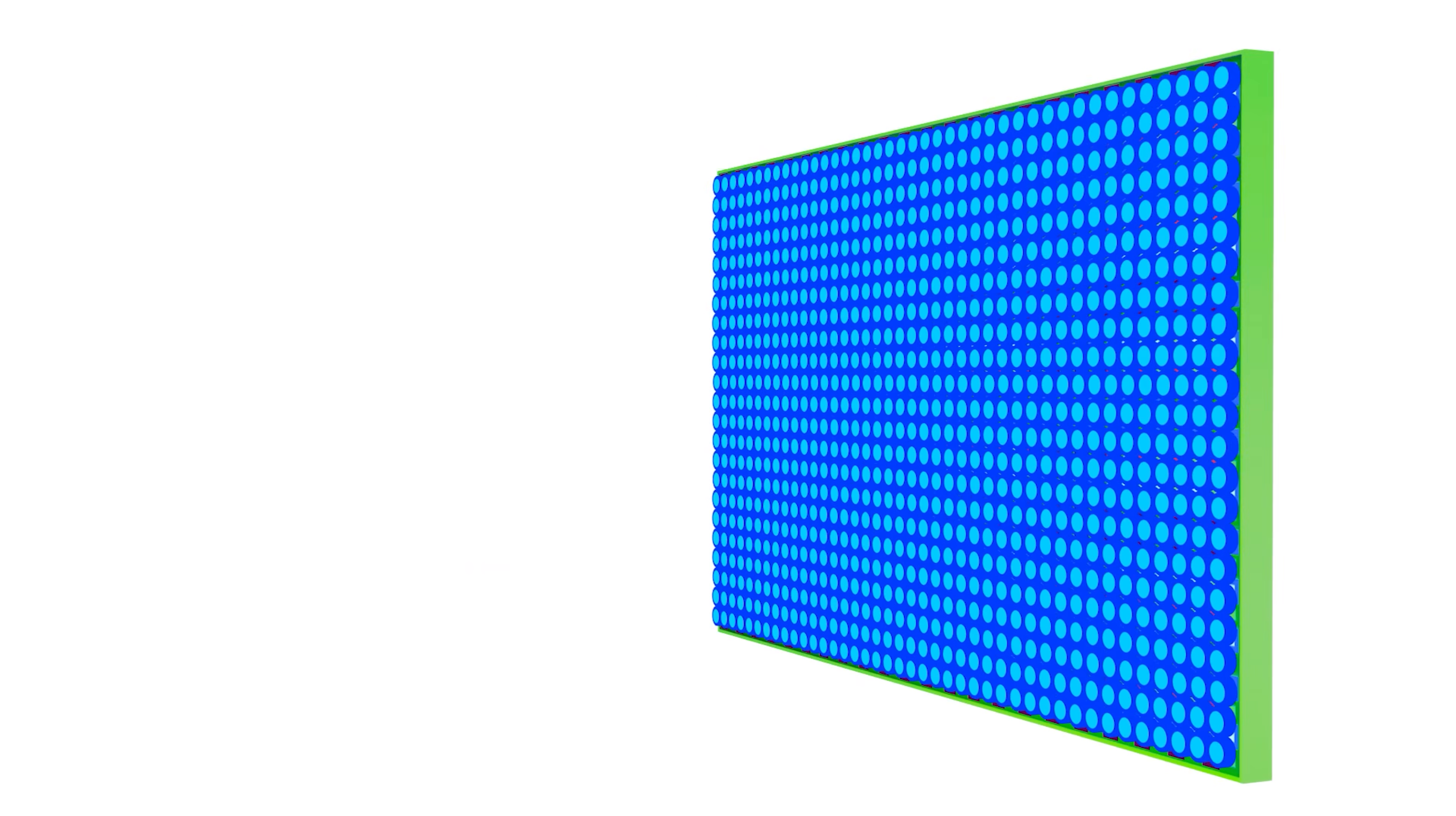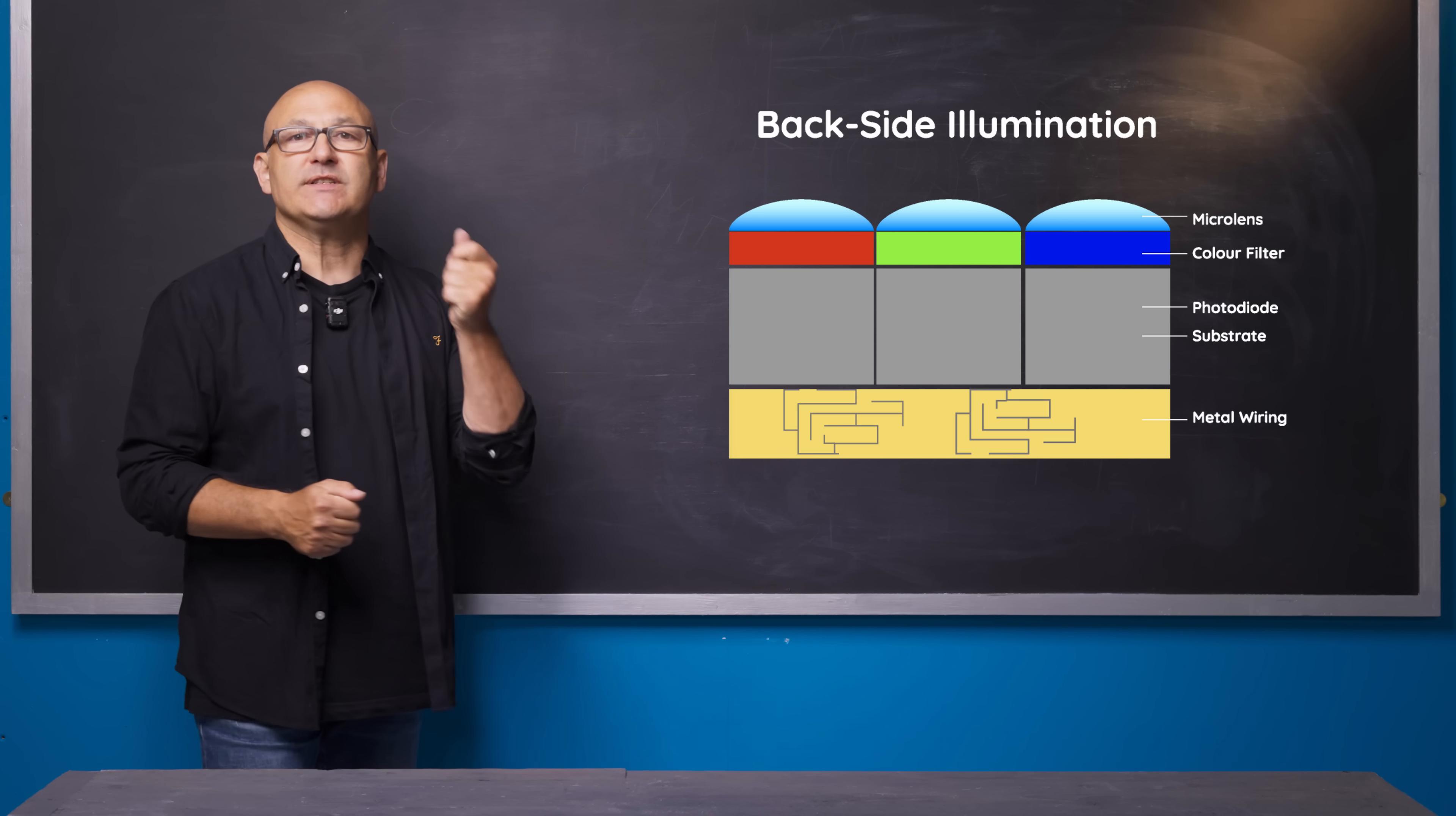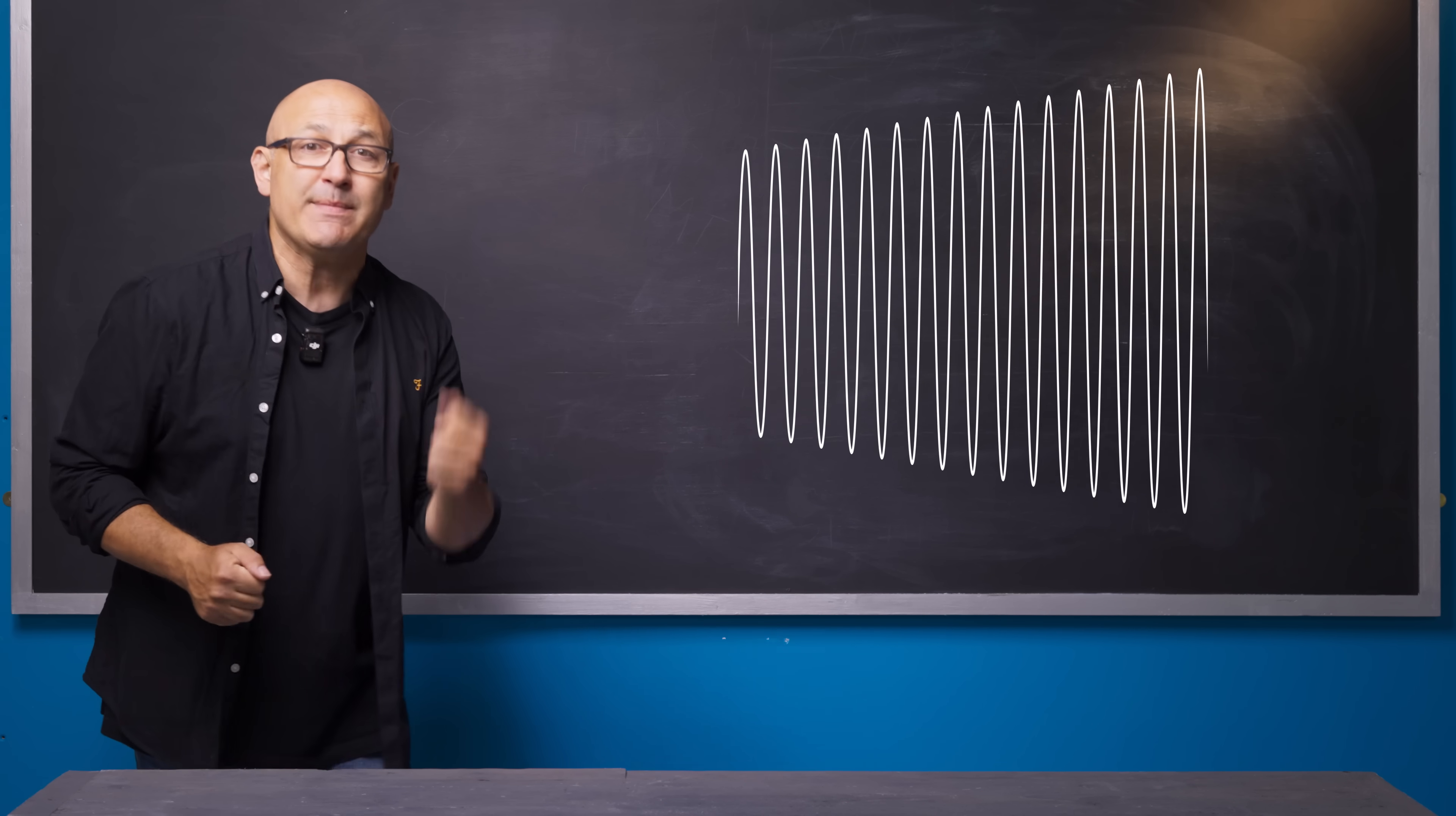In recent years with advances in sensor technology, such as microlensing directly above the photo sites and back illuminated sensors with advanced wiring, it means that photons are converted more efficiently and the amplification process can be ramped up quite high before it becomes too detrimental to an image.